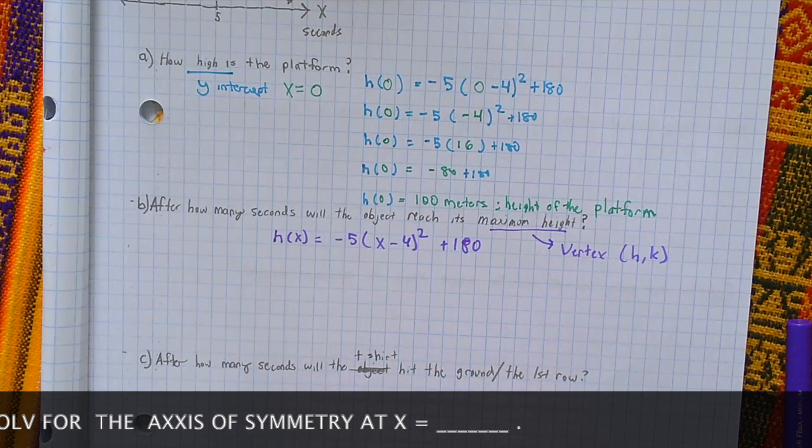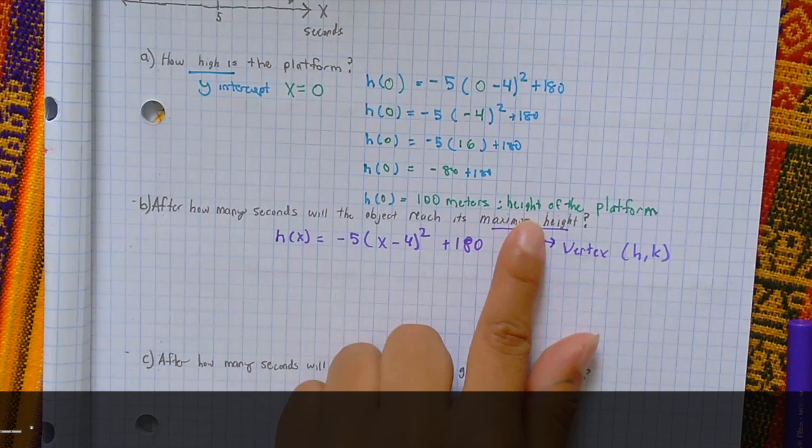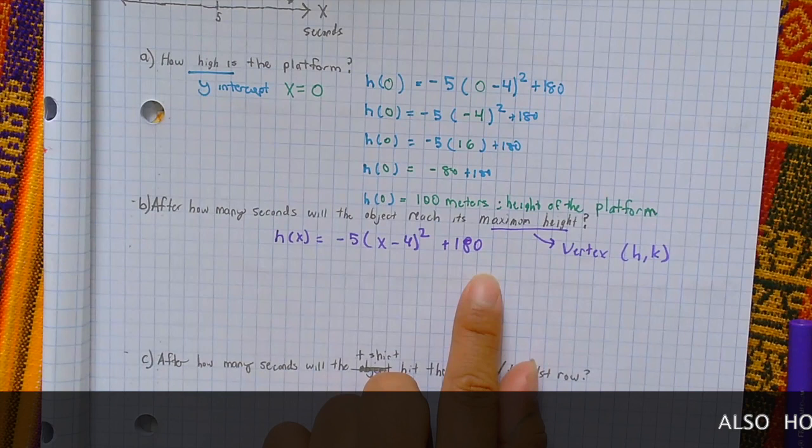So now, moving into part B, after how many seconds will the object reach its maximum height? Well, we know that the maximum height is going to be that vertex point, (H, K). And because we're in a vertex form, we can look at the equation and identify what that vertex point might be.